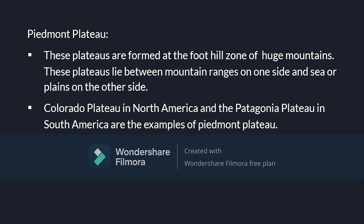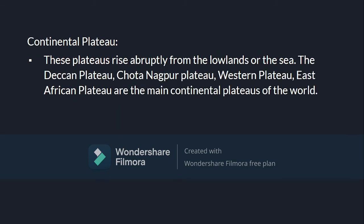The next type is the Piedmont plateau. These plateaus are formed at the foothill zone of huge mountains and lie between mountain ranges on one side and the sea or plains on the other side. Examples include the Colorado Plateau in North America and the Patagonia Plateau in South America. The third type is the Continental plateau, which rises abruptly from the lowlands or the sea. The Deccan Plateau, Chotanagpur Plateau, and East African Plateau are the main continental plateaus of the world.